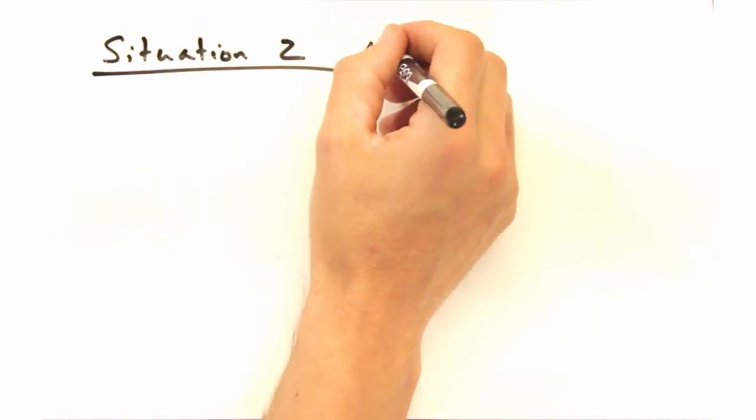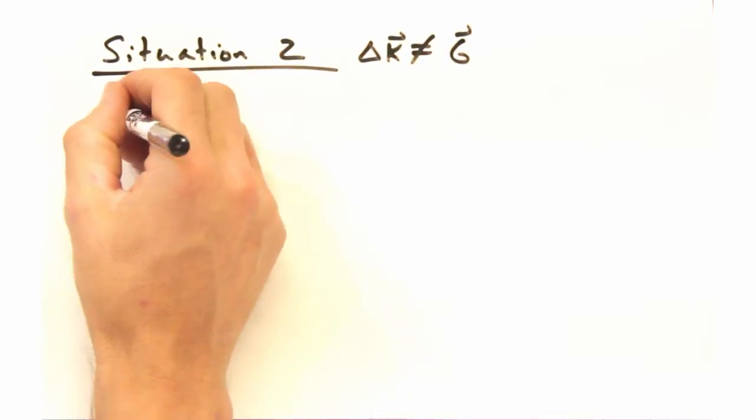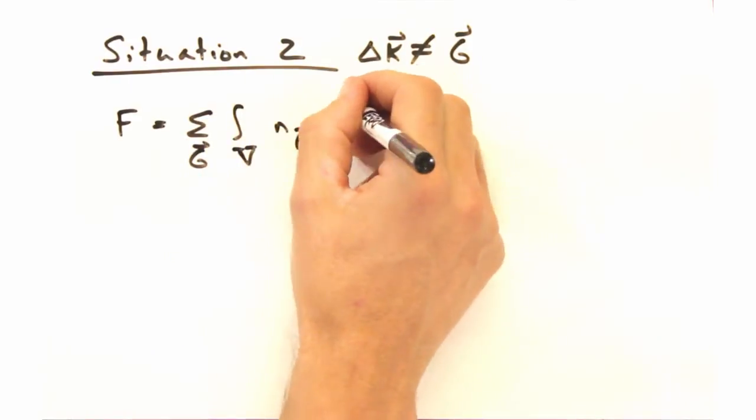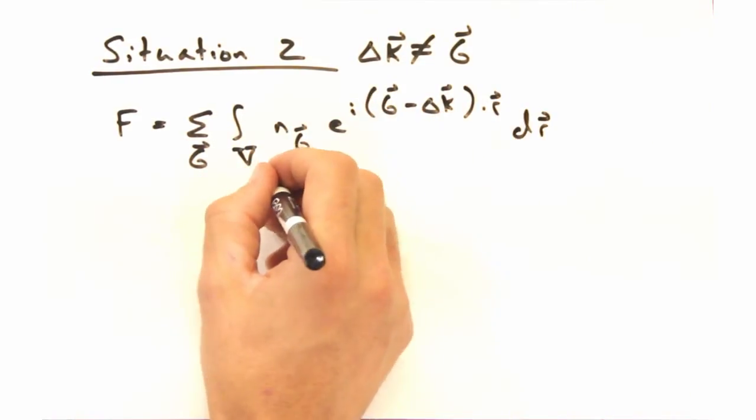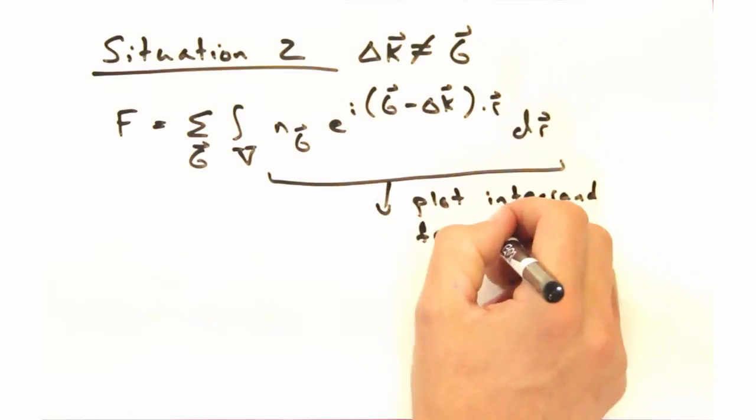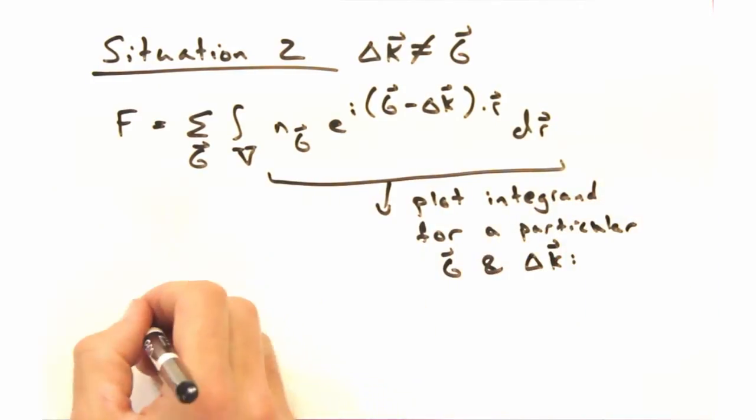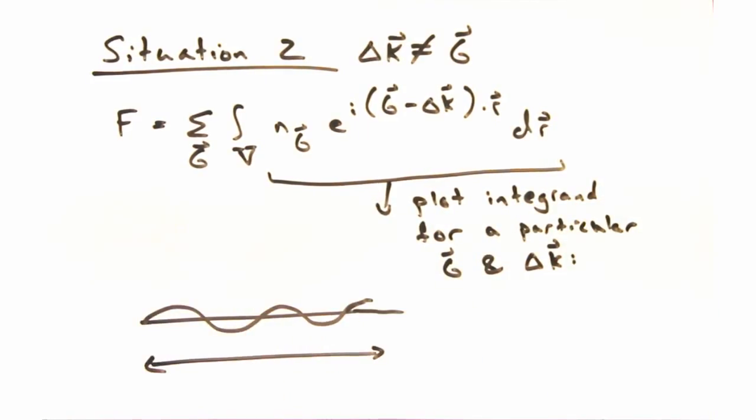So what about the other situation? The other situation is when delta K never equals any G-naught. In that case, we would never have this major contribution. Instead, we would only have the smaller terms contributing, so we never get a major diffraction peak. It seems like most of the time we're going to have destructive interference, and only every now and again will we encounter constructive interference. Yeah, that sounds about right.